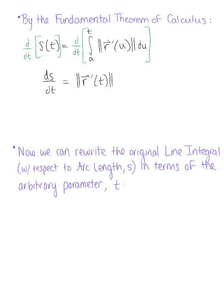To do that, all we need to do is isolate ds. We can multiply both sides of this expression by dt, which leaves us with the differential ds equals the magnitude of the tangent vector with respect to t, dt, which is exactly what we need.